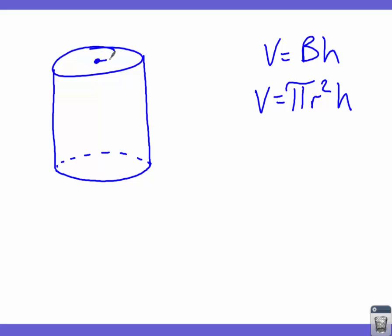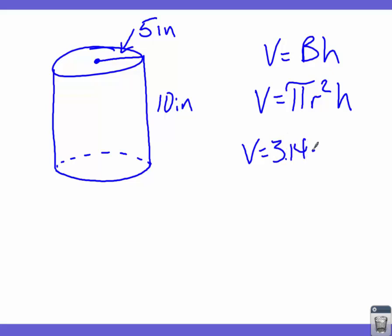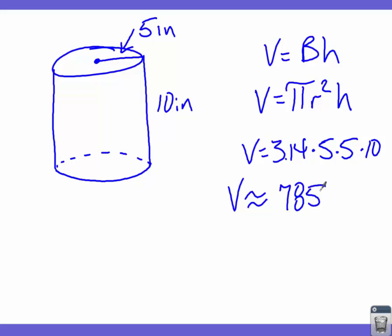Let's say the radius is 5 inches and the cylinder is 10 inches tall. Volume equals 3.14 times 5 times 5 times 10 — we use 3.14 as our approximation for pi, and squaring the radius means multiplying it twice. Plugging into the calculator: 3.14 times 5 times 5 times 10 gives us 785 inches cubed. It's still a three-dimensional object, so we use inches cubed.